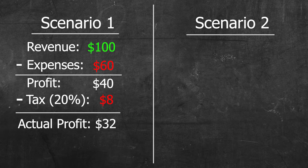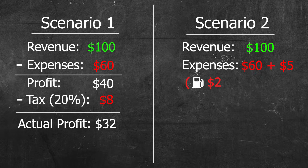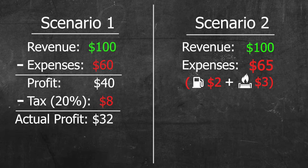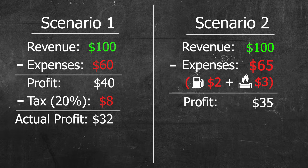Now, imagine the following month our revenue is still $100 and our expenses are still $60. But we report our expenses as $65 because we claim $2 for the gas we use on our personal car and $3 for the cooking gas from our kitchen as business expenses. Remember, we're not actually spending an extra $5 — we spend that $5 every month anyway. We're simply labeling our expenses differently. So from the government's standpoint, our net profit is now only $35. From that, we pay 20% in taxes, which is $7. So we save an extra $1 in taxes.